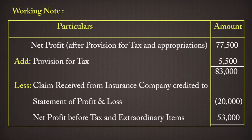As per format, we will add provision for tax Rs. 5,500, making the total Rs. 83,000. Then we will minus the claim received from the insurance company — since the claim received is credited to the statement of profit and loss, we will minus it. Net profit before tax and extraordinary item will be Rs. 53,000.